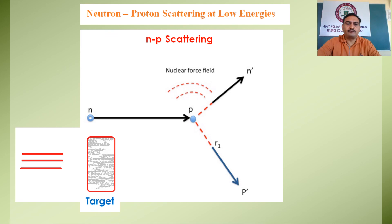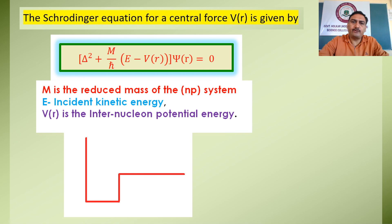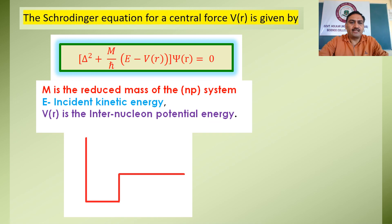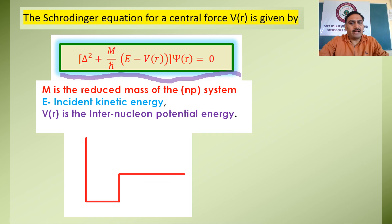Moving further, let us begin to address the neutron-proton scattering mathematically. For this, we need to write the Schrödinger equation considering a central force potential. The Schrödinger equation is the wave equation which expresses the wave function ψ of the matter wave under different physical conditions. Here, the Schrödinger equation for a central potential V(r) is written as follows, where M is the reduced mass of the neutron-proton system, E is the incident kinetic energy, and V(r) is the internuclear potential energy.